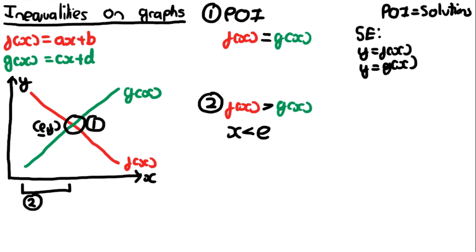Remember, e is the x-coordinate of the point of intersection. At point e, f(x) is no longer greater than g(x) because they are equal there. We could write this in set notation as: {x : x < e}.